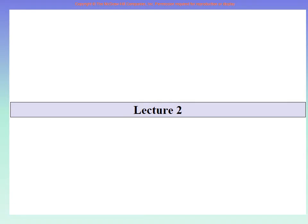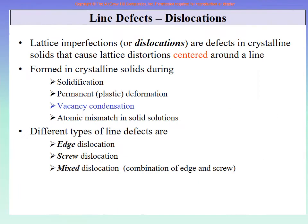So let us start today's lecture and continue from where we left off last time. We left at line defects, having finished the four types of point defects. Now we go to line defects. The most famous type of line defect is called a dislocation.